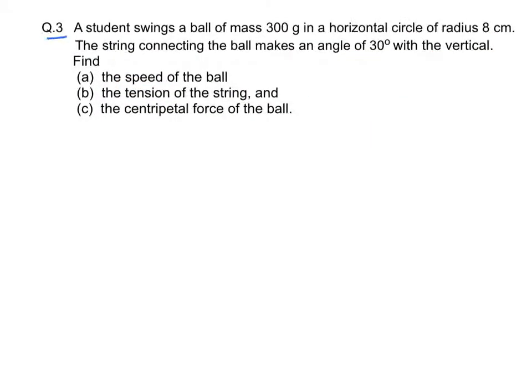Question 3: A student swings a ball of mass 300 grams in a horizontal circle of radius 8 cm. The string connecting the ball makes an angle 30 degrees with the vertical. Find the speed of the ball, the tension in the string, and the centripetal force of the ball.